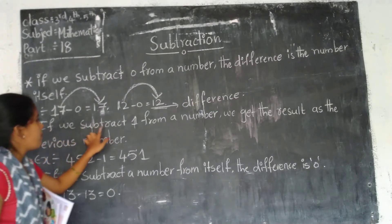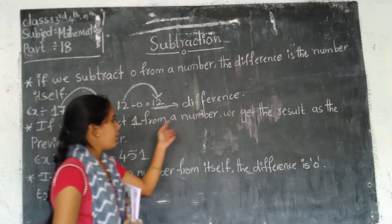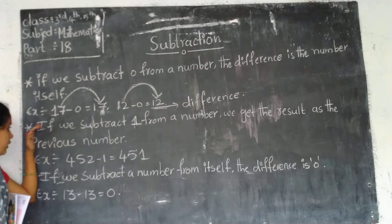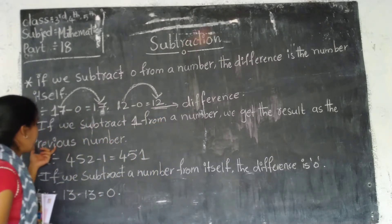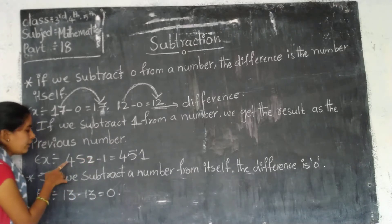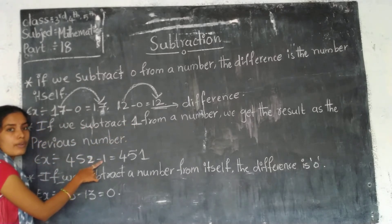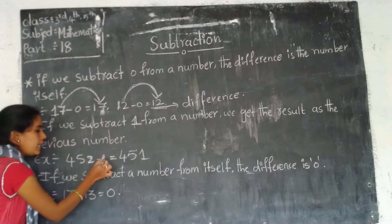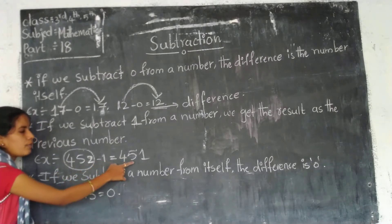The second property: if we subtract 1 from a number, we get the previous number as the result. So let's take one example. Here I am taking 452 minus 1. Any number subtract 1 — what is the answer? We get the previous number of that number. 452 minus 1 equals 451.